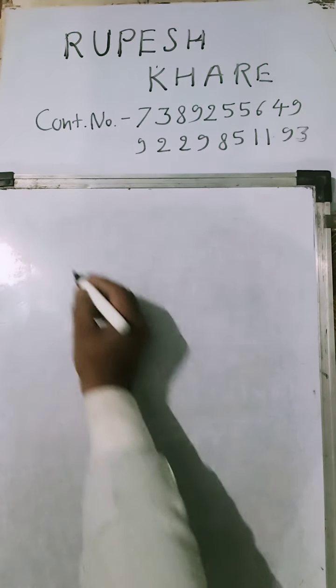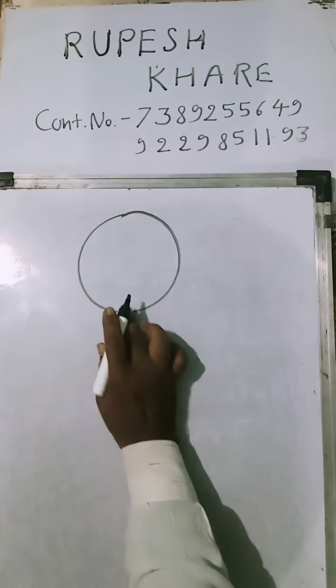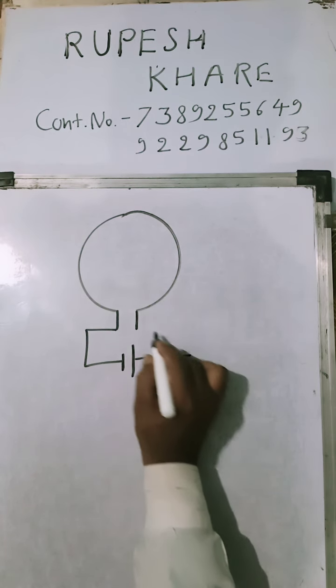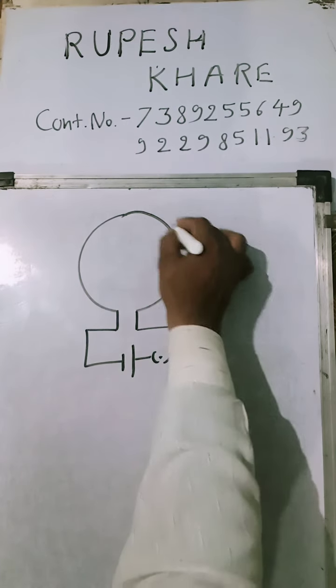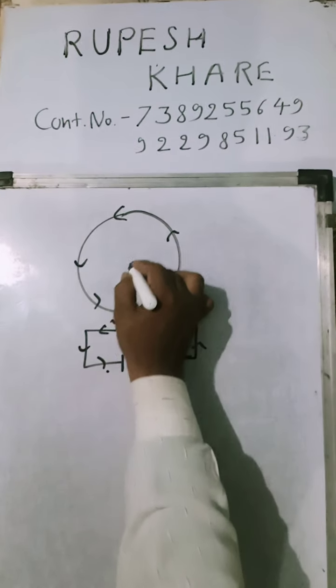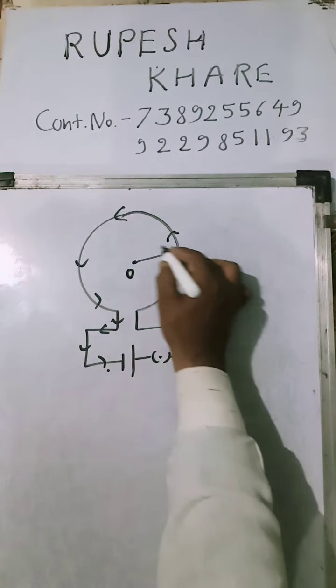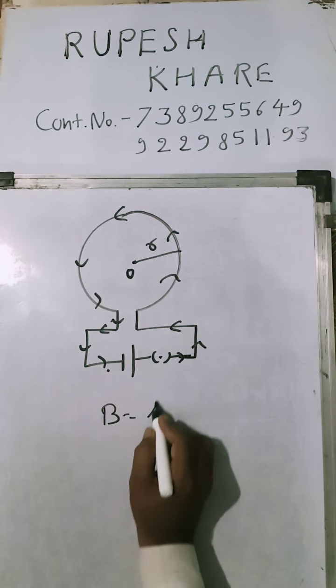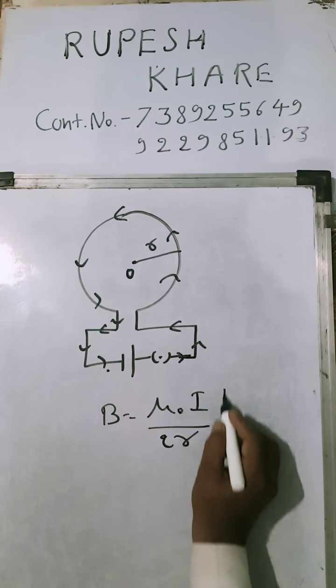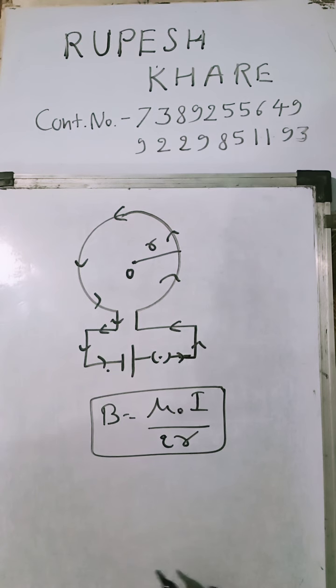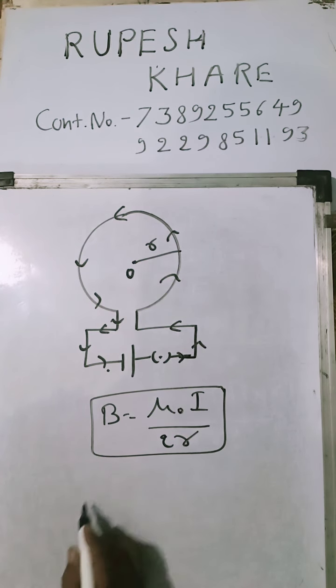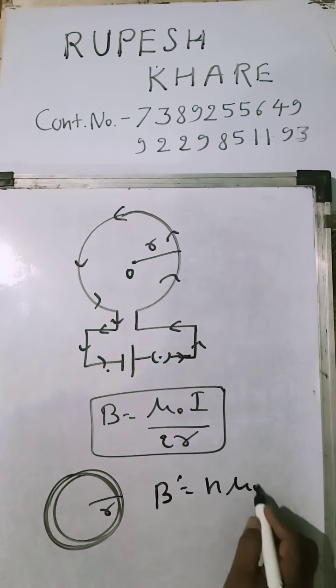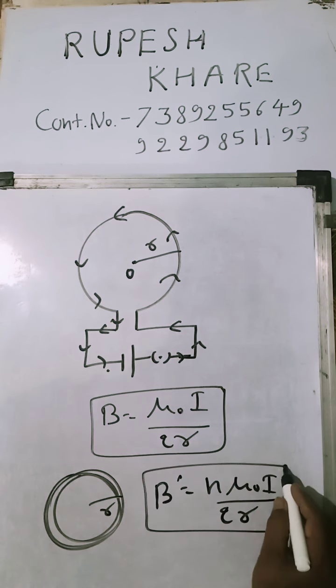An application is the magnetic field at the center of a current-carrying circular wire. If current is flowing, the magnetic field at the center is mu_0 i upon 2R, where R is the radius. If the number of turns is n, then the value of b is n times mu_0 i upon 2R.